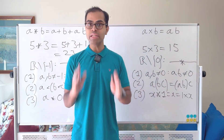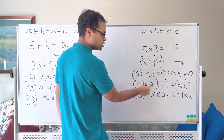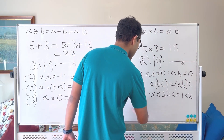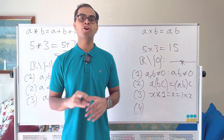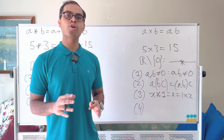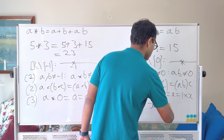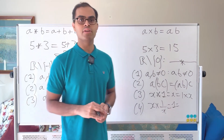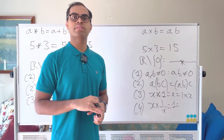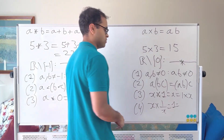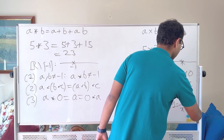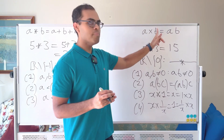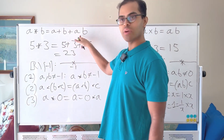The fourth property, which completes the structure of a group, is inverses. This is why we delete 0: an inverse means that for any x, I can multiply x by something to get the identity, which is 1. That something is 1/x — every non-zero x has a multiplicative inverse 1/x such that x × (1/x) = 1. Zero cannot have a multiplicative inverse because 0 times anything is 0, which is why we exclude it. Also, these operations are commutative: ab = ba, so the order doesn't matter.